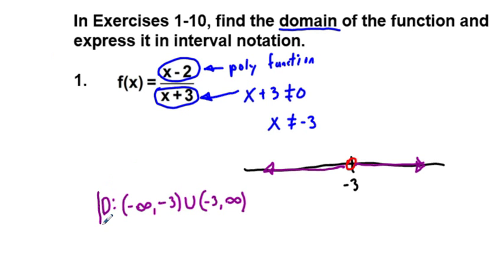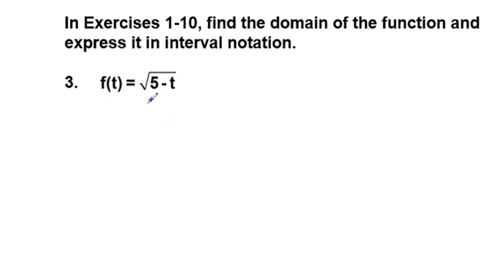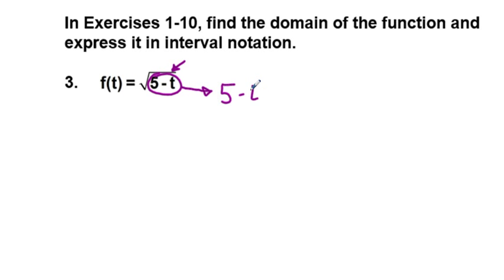Next odd-numbered problem is 3. We have f(t) equals the square root of 5 minus t. Again, we look for an exclusion. In this case, we do not have a polynomial function. We know that 5 minus t is within a radical, and you can take the square root of a number greater than or equal to 0. So we write 5 minus t is greater than or equal to 0.